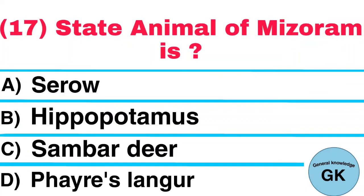Question Number 17. State Animal of Mizoram is: A. Sero, B. Hippopotamus, C. Sambar Deer, D. Fares Lingur. Answer: Sero.